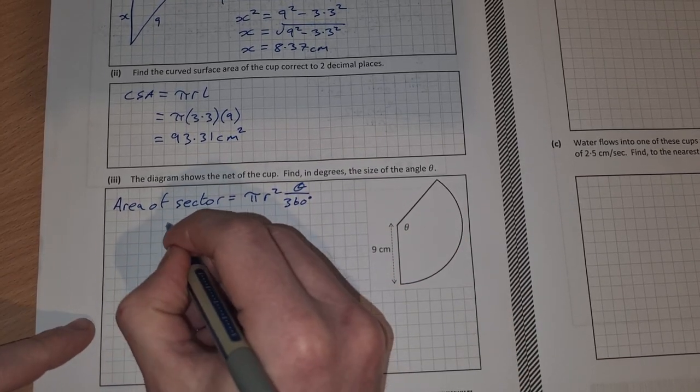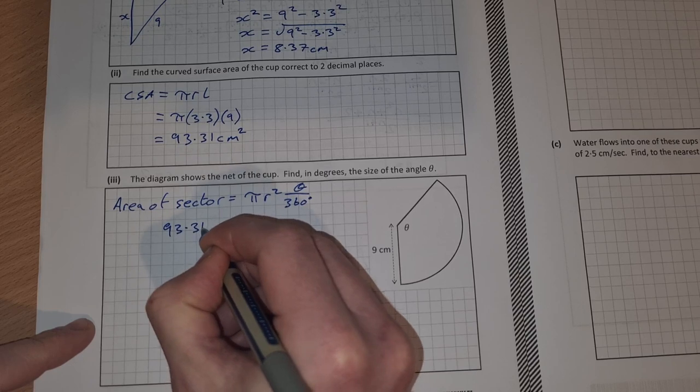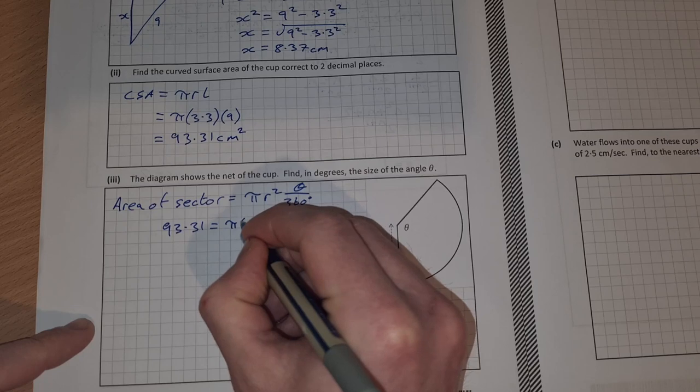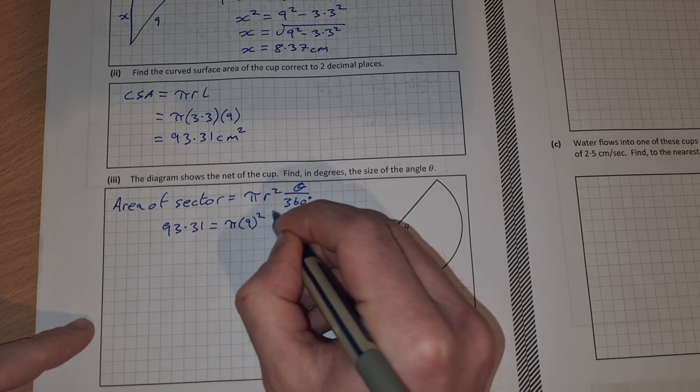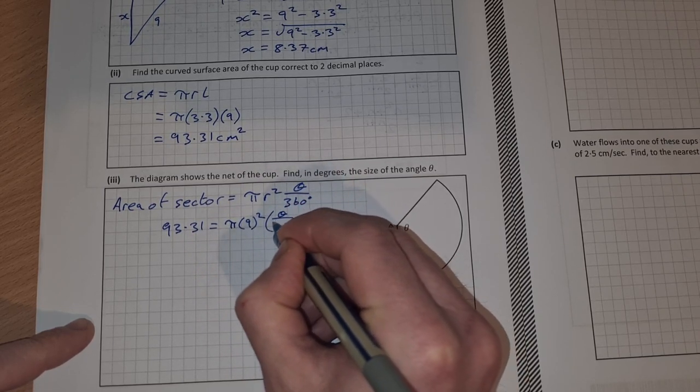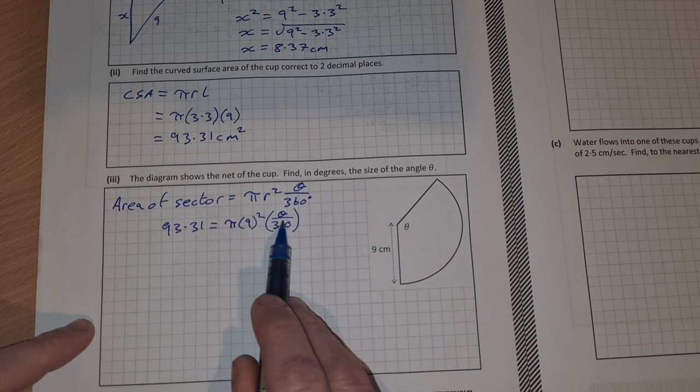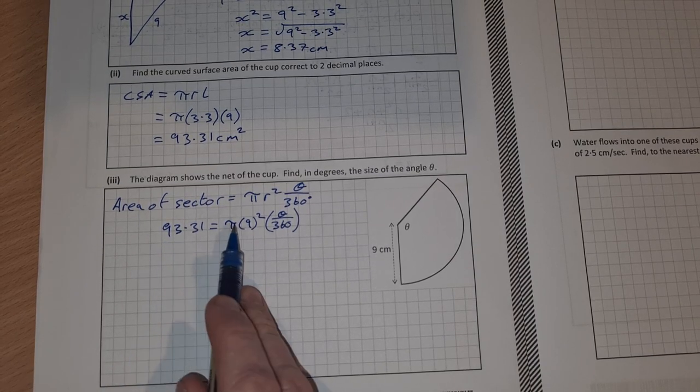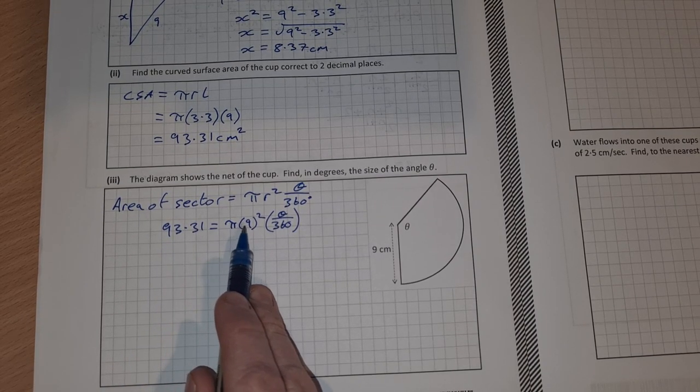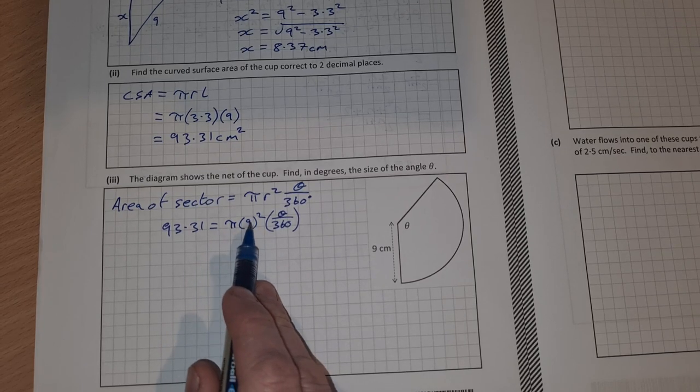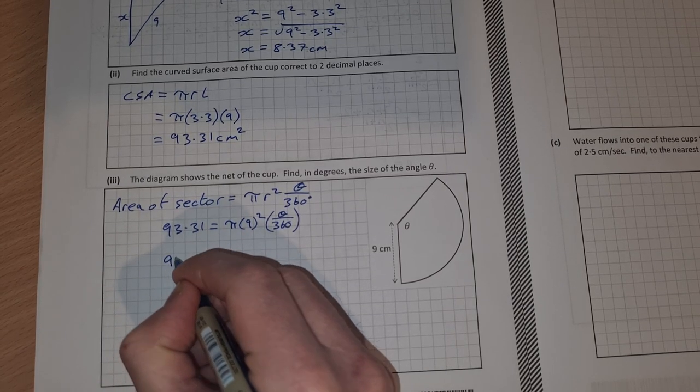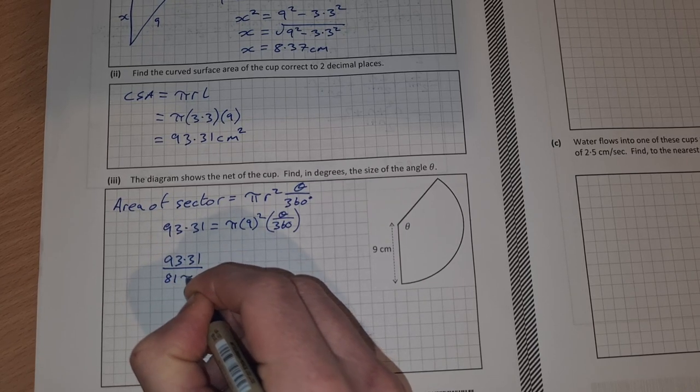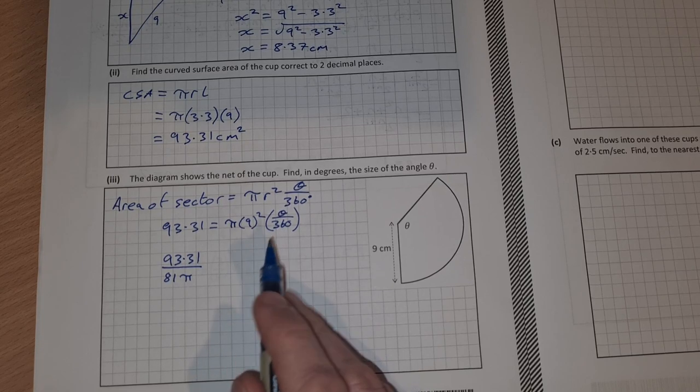We know the area is 93.31. π is π. We know r. R is 9 so that's times 9 squared and it's times θ over 360. Now we just have one unknown and we can solve for θ. If I divide across by π times 9 squared, so that's 81π, that'll be 93.31 divided by 81π. Then I'm also going to multiply by 360.